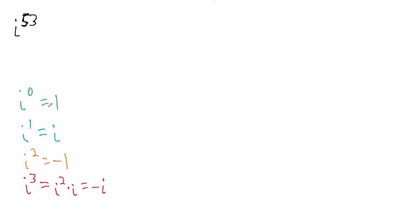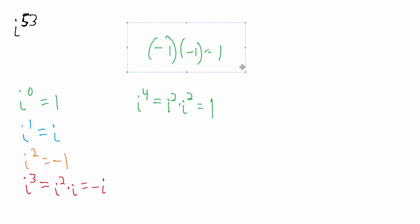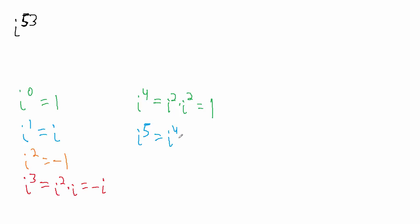Now let's take a quick look at the next four. We have i to the zero, one, two, three — next is i to the fourth. i to the fourth is i squared times i squared, which is negative one times negative one. Negative one times negative one is just positive one, so this is positive one. Now what about i to the fifth? Here's where things start to get good.